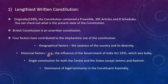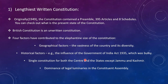The second is historical factors. For example, the influence of the Government of India Act 1935, which was itself bulky — much of our constitution has been borrowed from the Government of India Act 1935. Third, single constitution for both center and the states except Jammu and Kashmir. Indian constitution contains provisions for both the central government and state governments. Jammu and Kashmir has its own separate constitution.